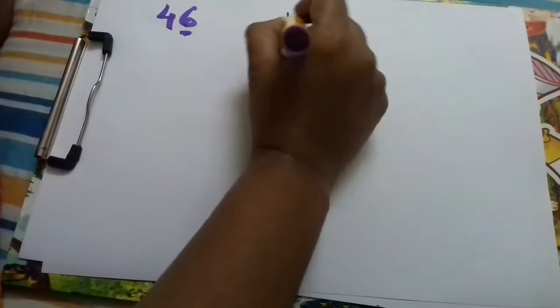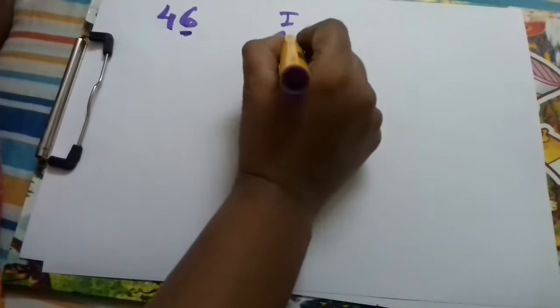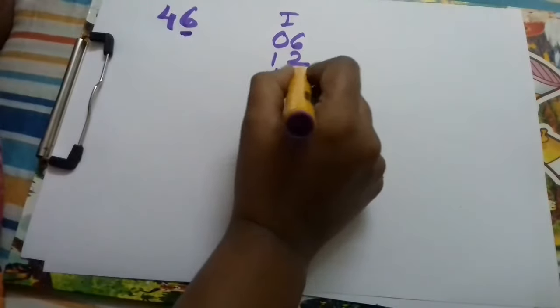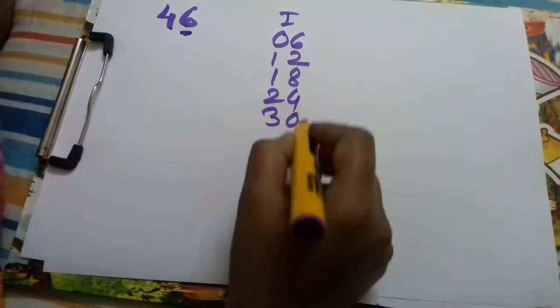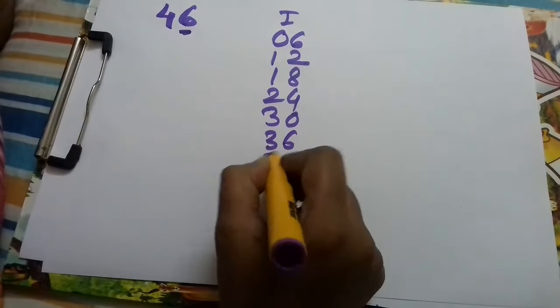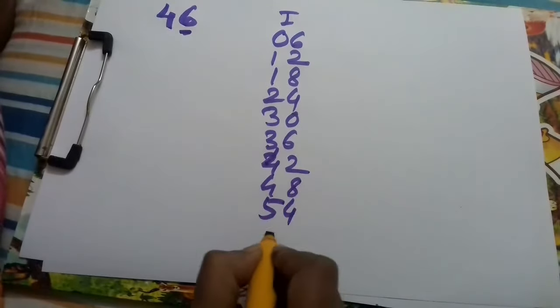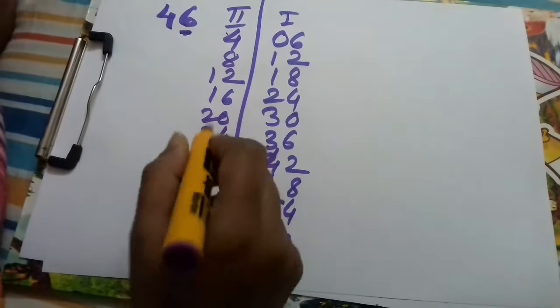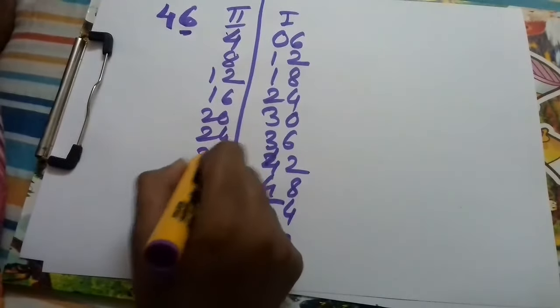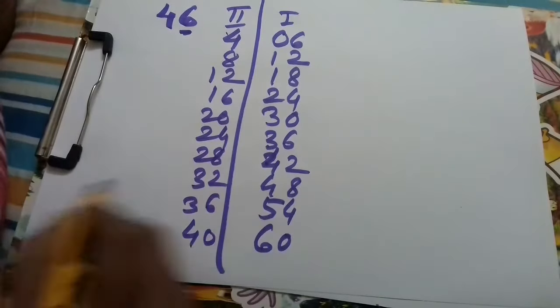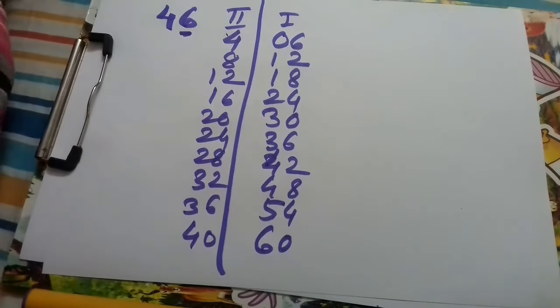Take 46. Write the table of 6: 06, 12, 18, 24, 30, 36, 42, 48, 54, 60. Then write the table of 4: 2, 4, 6, 8, 10.